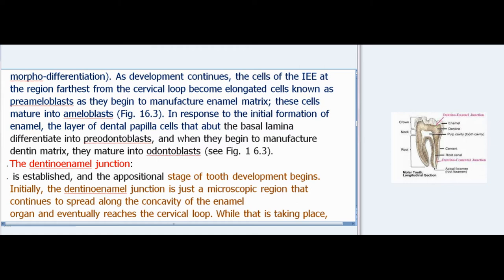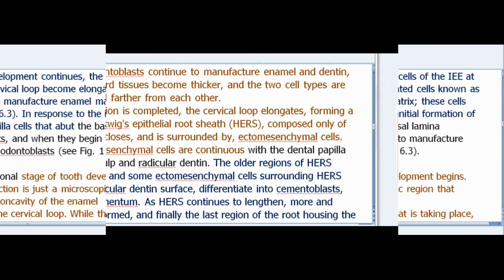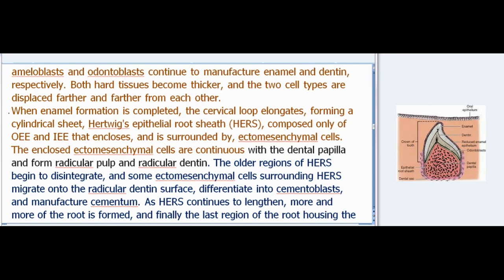The dentino-enamel junction is established and the appositional stage of tooth development begins. Initially the dentino-enamel junction is just a microscopic region that continues to spread along the concavity of the enamel organ and eventually reaches the cervical loop. While that is taking place, ameloblasts and odontoblasts continue to manufacture enamel and dentin respectively.